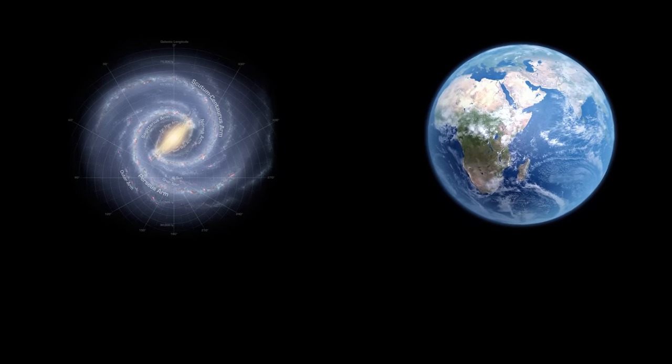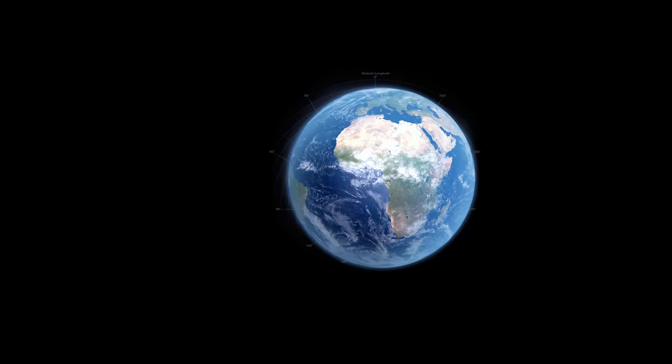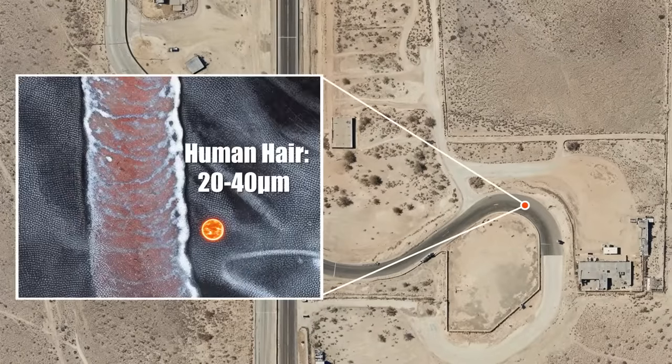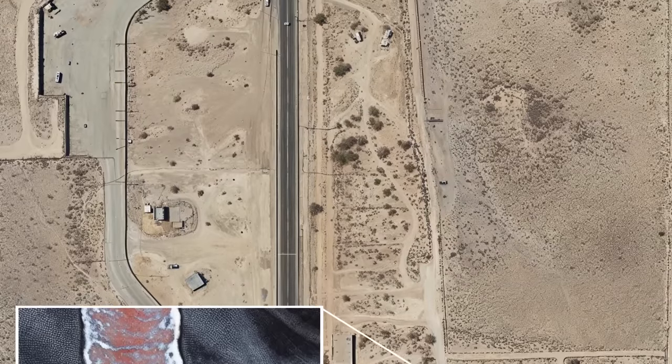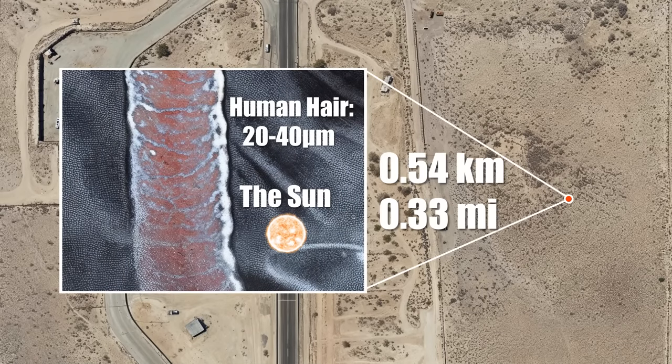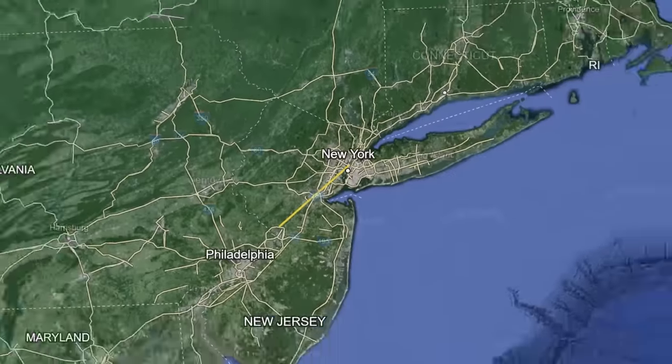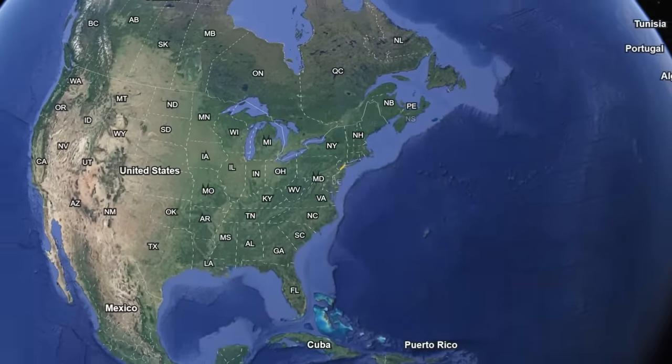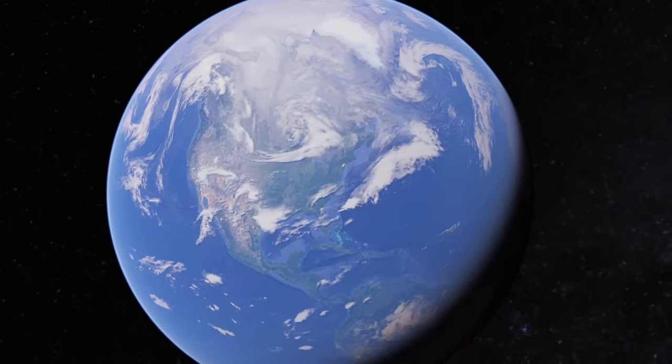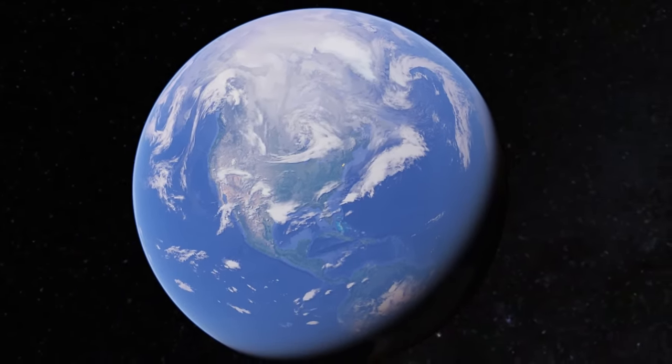In this miniature Milky Way, with its diameter equivalent to Earth's, Proxima Centauri, our nearest stellar neighbor, would be located just about half a kilometer away from our minuscule Sun. Meanwhile, Betelgeuse, one of the largest known stars and easily visible in the night sky from Earth, would find its place in this scaled-down version of our galaxy, just over 80 kilometers away.